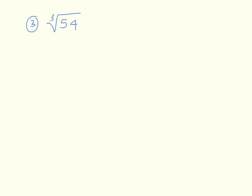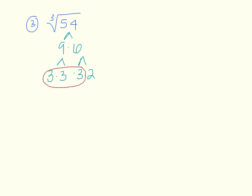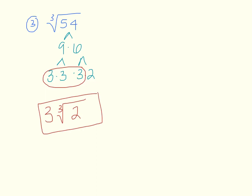For number 3, we have the cube root of 54. I'll do a factor tree: 54 is 9 times 6, which breaks down to 3 times 3 times 3 times 2 — that's a prime factorization. Since my index number is 3, I look for groups of 3. I have three 3s, so a 3 goes in front. I have a 2 left over, so it stays inside under the cube root. My answer is 3 times the cube root of 2. It's really important to write the cube root symbol correctly, because it's very different from a square root.